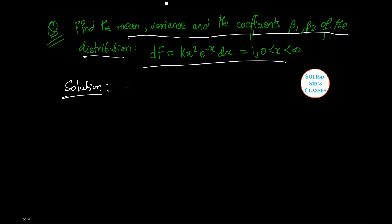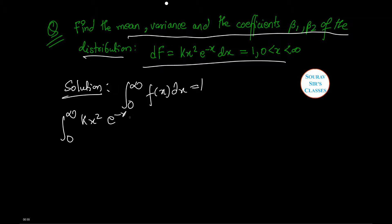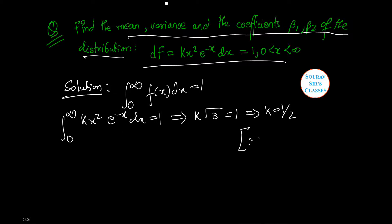Since the integral from 0 to infinity of f(x) dx equals 1, therefore the integral from 0 to infinity of kx squared e to the power minus x dx equals 1, that is k times gamma(3) equals 1, giving k equals 1/2. This uses the formula: integral from 0 to infinity of e to the power minus x times x to the power n minus 1 dx equals gamma(n) — remember this formula, it will be of use in further cases.